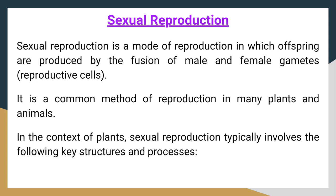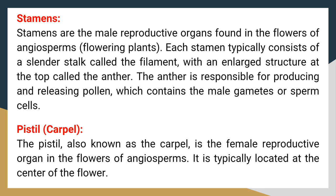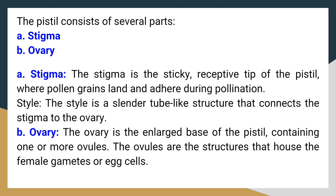Sexual reproduction is a mode of reproduction in which offspring are produced by the fusion of male and female gametes, reproductive cells. In the context of plants, sexual reproduction typically involves specific key structures and processes. Stamens are the male reproductive organs found in the flowers of angiosperms. Each stamen typically consists of a slender stalk called the filament, with an enlarged structure at the top called the anther, which is responsible for producing and releasing pollen containing the male gametes or sperm cells. The pistil, also known as the carpel, is the female reproductive organ in the flowers of angiosperms, typically located at the center of the flower.